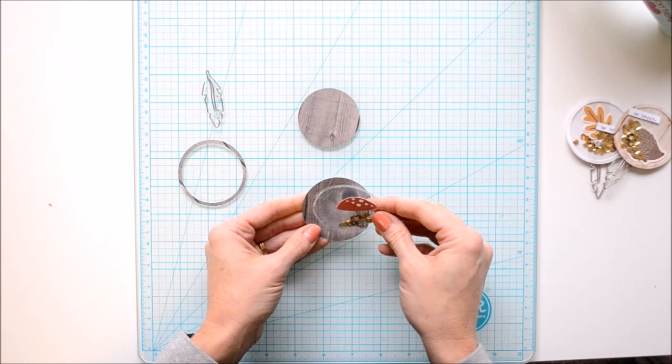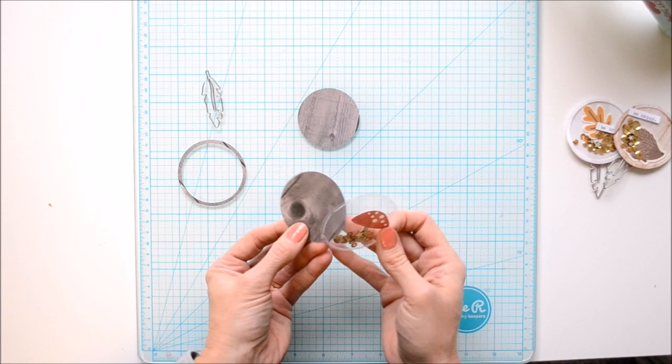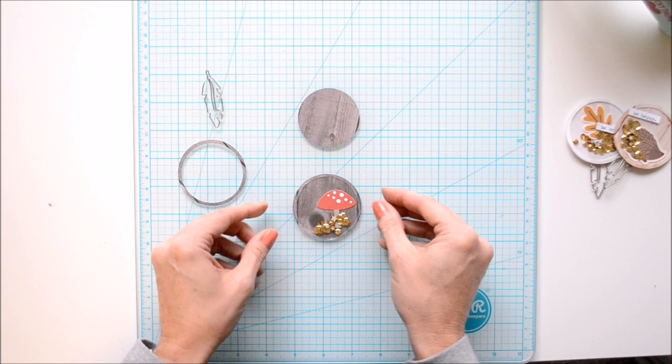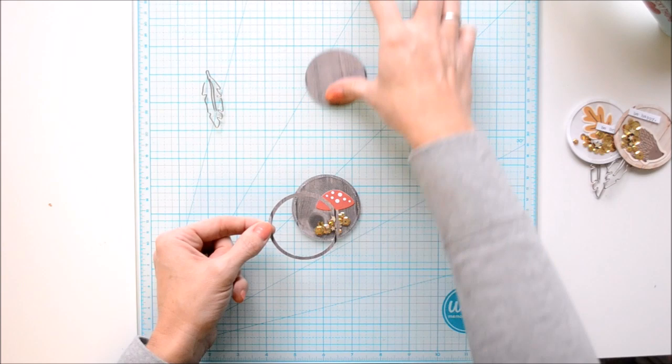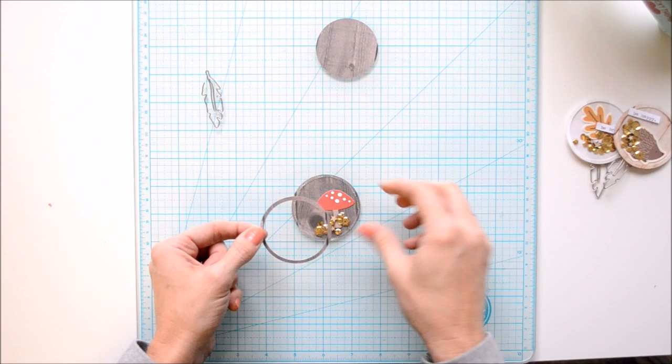Now what you need is a two and a half inch circle of patterned paper. I love that wood grain for fall with that mushroom, I think that's super cute. To make this frame I cut this with my circle cutter and I did two and a half and two and a quarter inch circles. I recommend doing the smaller circle first and then the larger circle, and keep your leftover because you're going to use that for something as well.